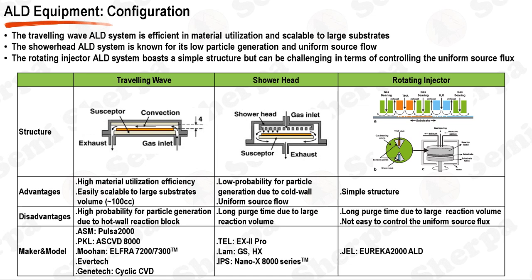On the other hand, the showerhead configuration offers a low probability for particle generation due to its cold wall system. It provides a uniform source flow, ensuring consistent deposition across the substrate. However, due to its large reaction volume, it requires longer purge times compared to other systems. Lastly, the rotating injector system boasts a simple structure which may be easier to maintain and operate. Like the showerhead system, it also has a large reaction volume which leads to longer purge times. One of the challenges with this system is the difficulty in controlling the uniform source flux.